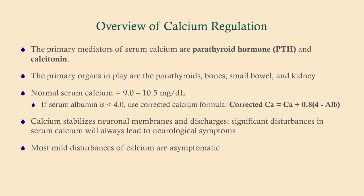The primary mediators of serum calcium — which is regulated pretty tightly at about 9 to 10.5 — are parathyroid hormone and calcitonin. The big one is PTH. The primary organs in play are the parathyroids, which secrete PTH; bone, which is a reservoir of calcium; the small bowel, responsible for absorbing dietary calcium; and the kidney, responsible for excreting or reabsorbing calcium. If albumin is below 4, use a corrected calcium formula or get an ionized calcium.